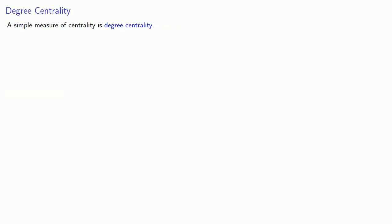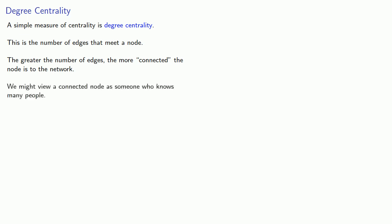A simple measure of centrality is degree centrality. This is just the number of edges that meet a node. The greater the number of edges, the more connected the node is to the network. And we might view a connected node as someone who knows many people. In fact, we say someone is well connected.